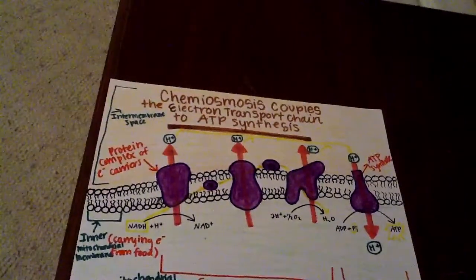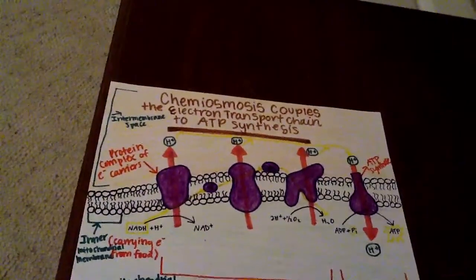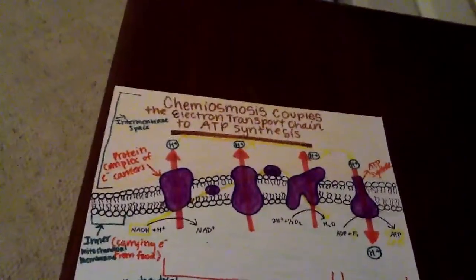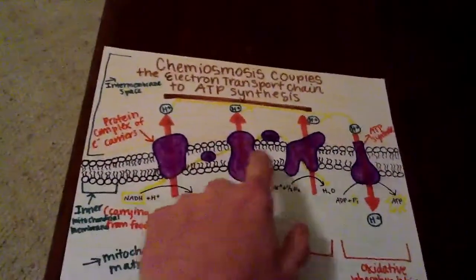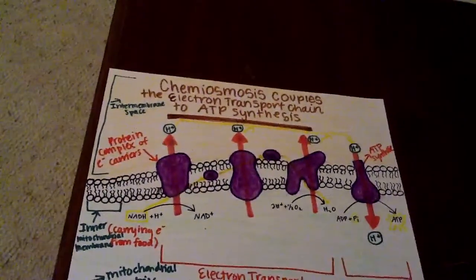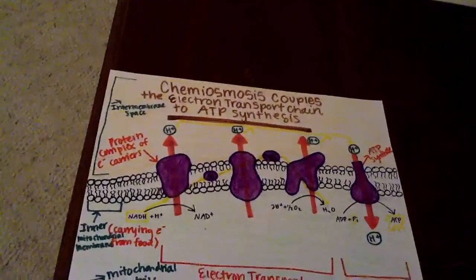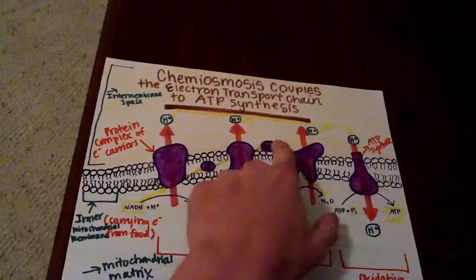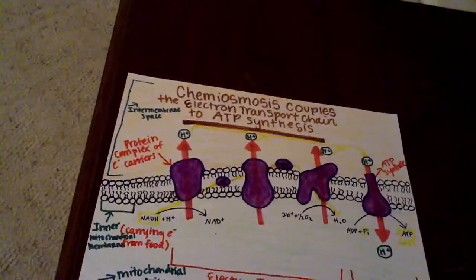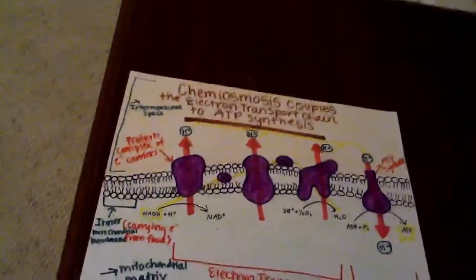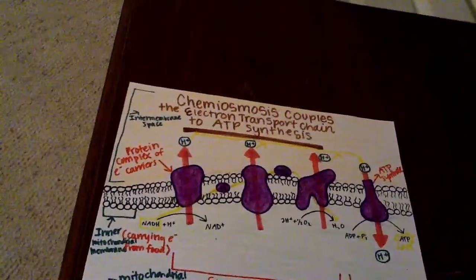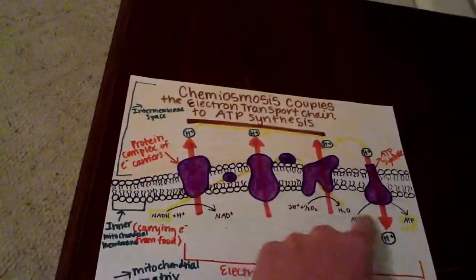Most of the electron carriers of the chain are grouped into three protein complexes, which are these three, and they're all three embedded in the membrane. Two mobile carriers, Q and cytochrome C, are here and here. They move fast along the membrane and carry electrons between the three large complexes, going along the gold arrow.